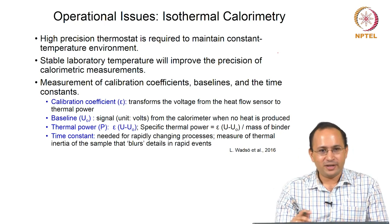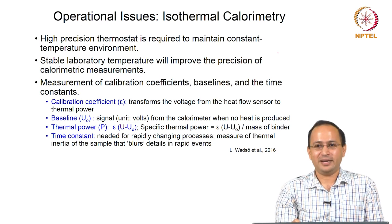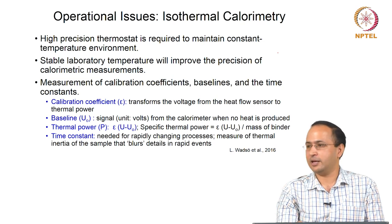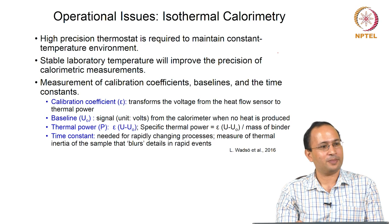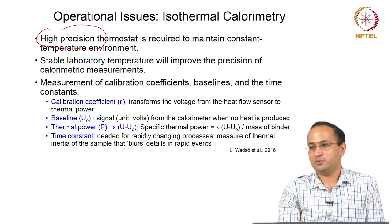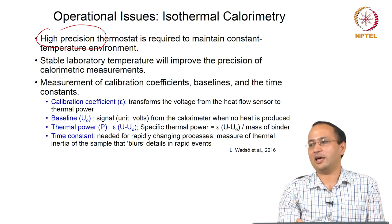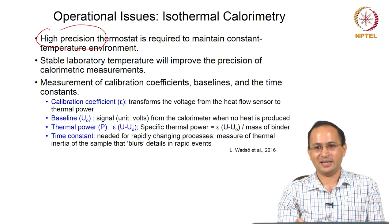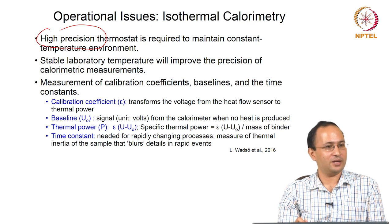So far we looked at different calorimeters and what outputs we get. Now it is important to look at operational issues. Starting with isothermal calorimetry: since we are trying to maintain temperature, a high precision thermostat is required to maintain constant temperature. Stable laboratory temperature will improve the precision of measurements — for example, if you want to run an experiment at 22 degrees Celsius but the room is 40 degrees Celsius, that is not good. The temperature should not fluctuate and variation should be very low.